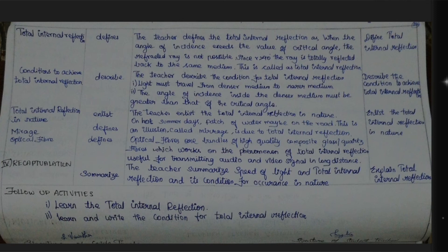Total internal reflection — definition: the teacher defines total internal reflection as when the angle of incidence exceeds the critical angle, the refracted ray is not possible since r > 90°, and the ray is totally reflected back into the same medium. This is called total internal reflection. Condition: light must travel from a denser medium to a rarer medium, and the angle of incidence must be greater than the critical angle.